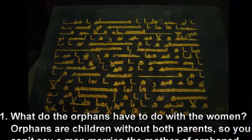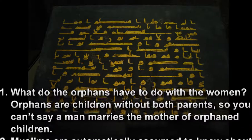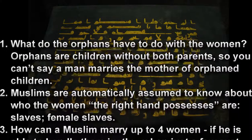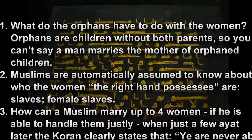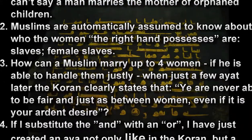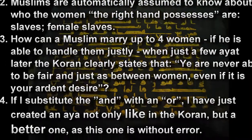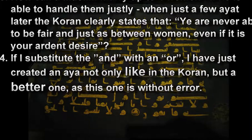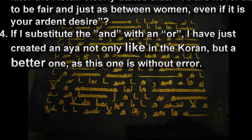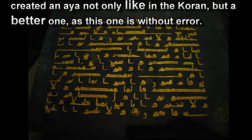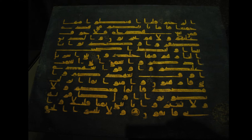There are some things I need to point out here. What do orphans have to do with the women? Orphans are children without both parents, so you can't say a man marries the mother of orphaned children. Muslims are automatically assumed to know that the women the right hand possesses are slaves — female slaves. How can a Muslim marry up to four women if he is able to handle them justly, when just a few ayat later the Quran clearly states that 'ye are never able to be fair and just as between women, even if it is your ardent desire'? If I substitute the AND with an OR, I have just created an ayat not only like in the Quran, but a better one — one without error. So that puts paid to all the claims that you cannot create a surah or verse like in the Quran.